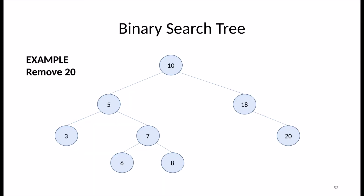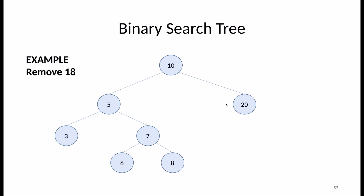Let's go through the examples. To delete 20 from the tree: start at 10, 20 is larger, go right; larger than 18, go right — found node 20. It's a leaf, so I simply delete it and update the pointer to null. For case two, deleting 18: start at 10, go right, find 18 — it has a single child (20). I update the pointer from 10's right child to point directly to 20, removing 18 from the tree.